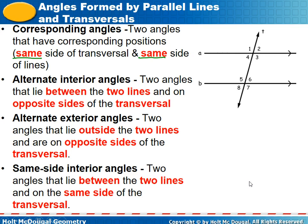Same-side interior angles are on the same side of the transversal and inside the parallel lines. Because they're not the same shape — one's acute, one's obtuse — those angles are supplementary. Angles three and six are same-side interior angles. The only two pairs we've discussed that are supplementary are linear pairs and same-side interior angles.